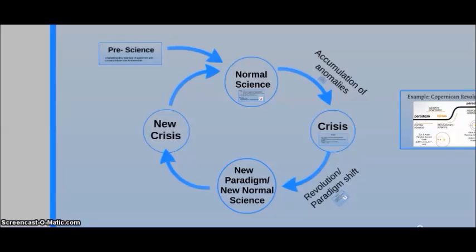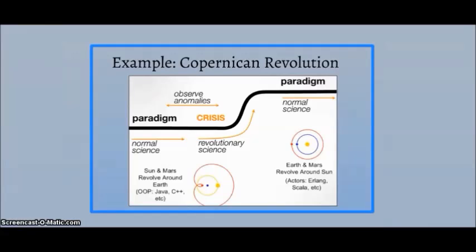Now we will look at an example of this shift occurring. In the Copernican Revolution, the original paradigm was that the Earth was the center of the universe with the Sun and Mars revolving around it. Following observation of sufficient anomalies, this paradigm reached a crisis, which resulted in a revolution. The new paradigm held that the Sun is at the center of the universe with Earth and Mars revolving around it. This paradigm will be the framework for normal science to continue until a point where a new crisis is reached.